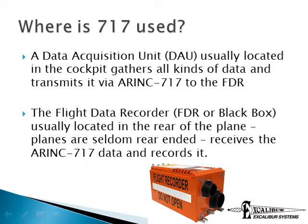ARINC 717 specifies an avionics communications bus used to transfer data from a data acquisition unit, or DAU, to a flight data recorder. The DAU is usually located in the cockpit in proximity to the various avionics units it gets its data from. The flight data recorder, or black box, is usually located in the back of the plane, regarded as the most survivable part of the plane since planes tend to crash nose first.